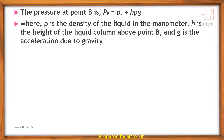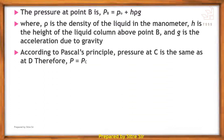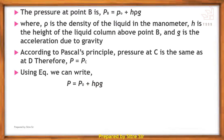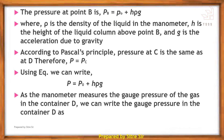Here, rho is the density of the liquid in the manometer, H is the height of the liquid column above points B and C, and g is the acceleration due to gravity. According to Pascal's principle, the pressure at C equals the pressure at D. Therefore, P equals Pc, and we can write P equals P0 plus H·rho·g. The gauge pressure of the gas in container T is P minus P0, which equals H·rho·g.